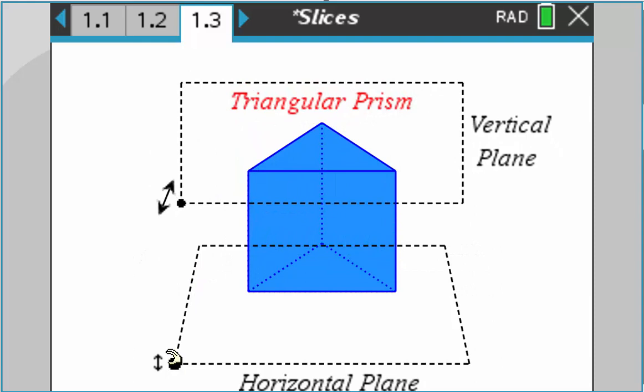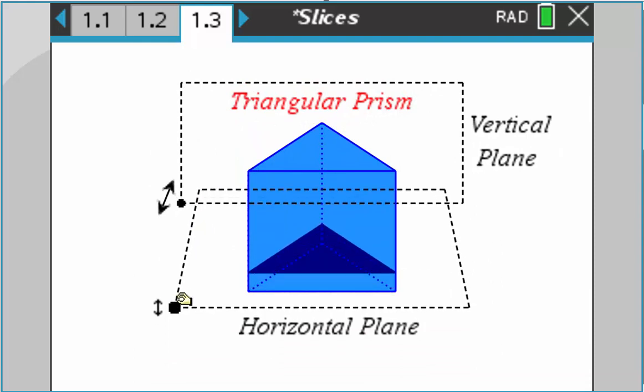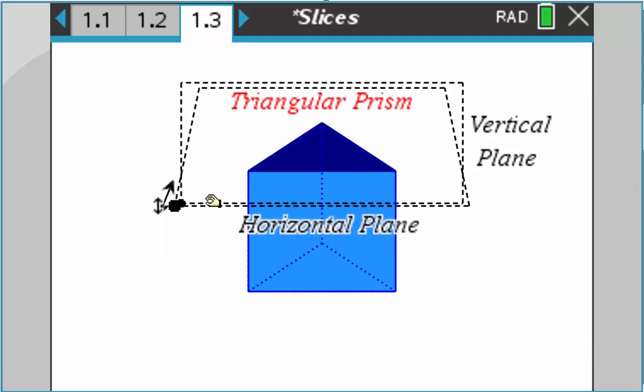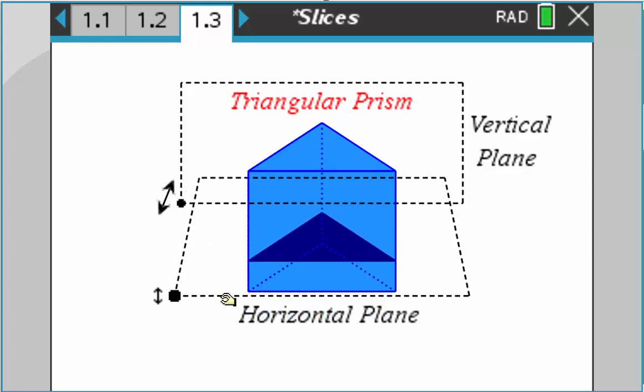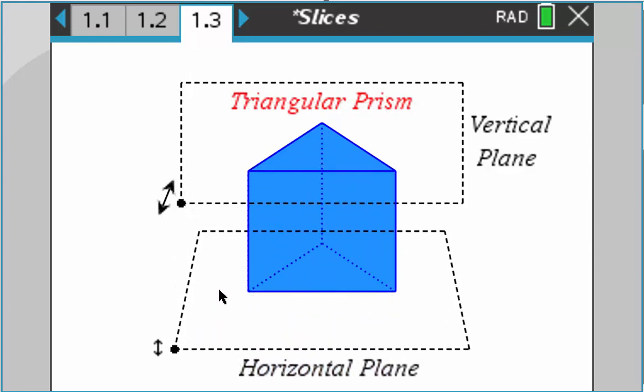And then when I do the horizontal plane, pull it up, you can see it's just whatever the base is, whatever that triangle is. And again, this is something very hard for students to visualize and this helps them quite a bit.